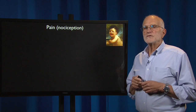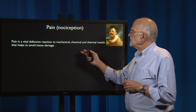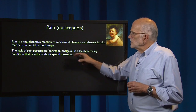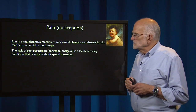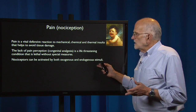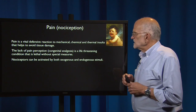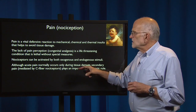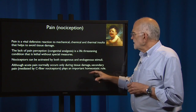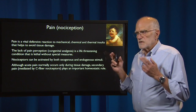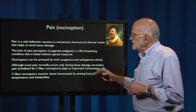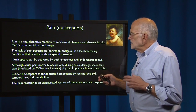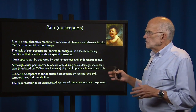Pain is extremely useful. It's a vital defensive reaction to any mechanical, chemical, or thermal insult, and it helps to avoid tissue damage. The lack of pain perception — congenital analgesia — is a life-threatening condition that is lethal without special measures. Pain receptors, nociceptors, can be activated by both exogenous and endogenous stimuli. Although acute pain normally occurs only with tissue damage, secondary pain, which is mediated by C-fiber nociceptors, plays an important homeostatic role — it's a reminder to the body that something needs fixing. C-fiber nociceptors monitor tissue homeostasis by sensing local pH, temperature, and metabolites. The pain reaction is an exaggerated version of these homeostatic responses.